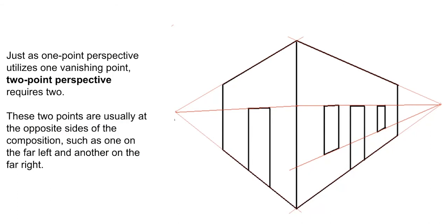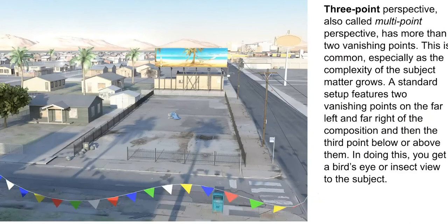Just as one-point perspective uses one vanishing point, two-point perspective requires two. These two points are usually at opposite sides of the composition — one on the far left and one on the far right — with things receding toward those two points. Three-point perspective, also called multi-point perspective, has more than two vanishing points. This is common as the complexity of the subject matter grows. A standard setup features two vanishing points on the far left and right of the composition and a third point below or above them, giving you a bird's eye view or an insect view.